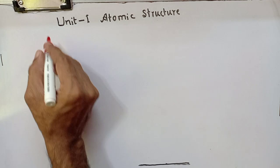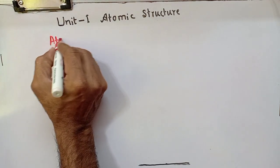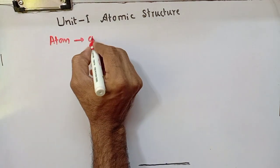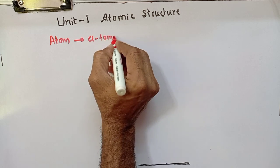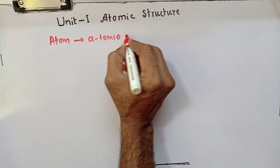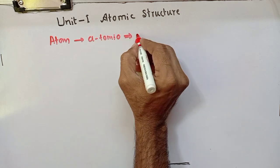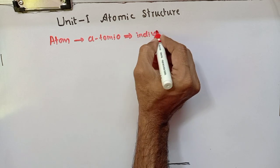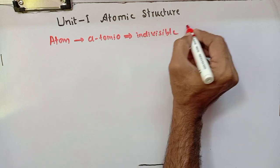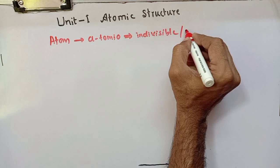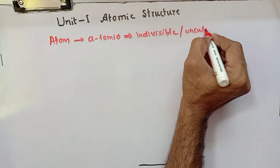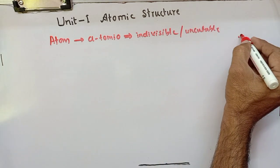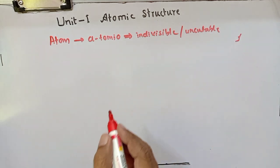The term atom is derived from a Greek word 'atomeo', which means indivisible or uncutable. That means we cannot cut an atom into two or three parts.